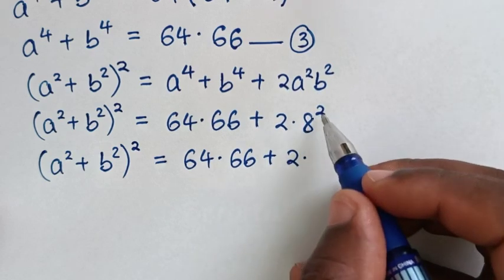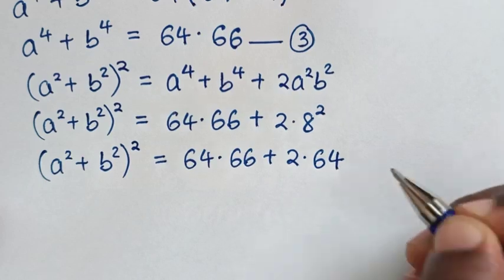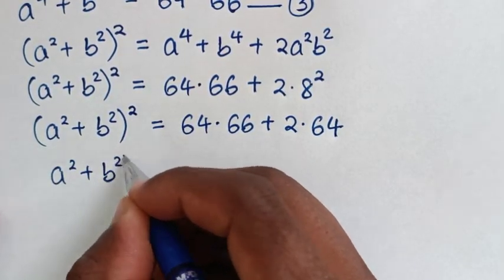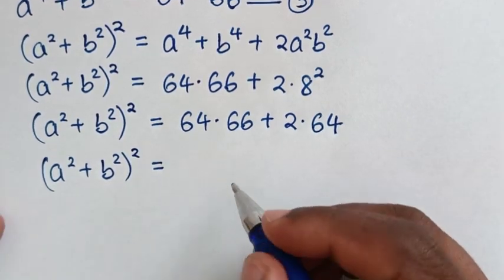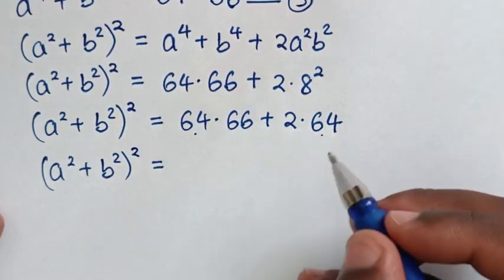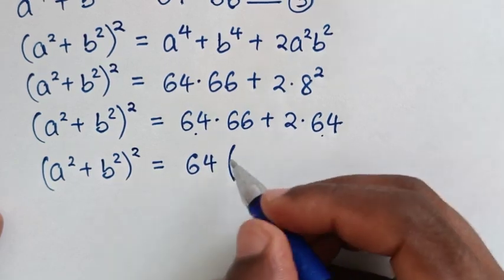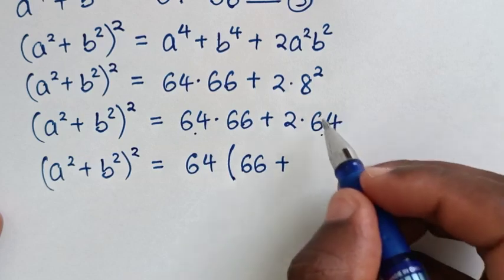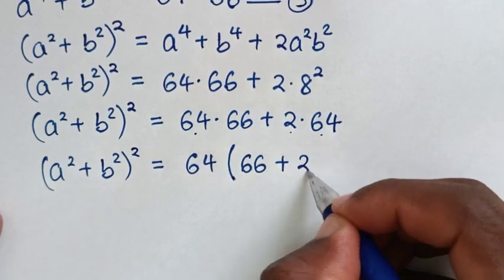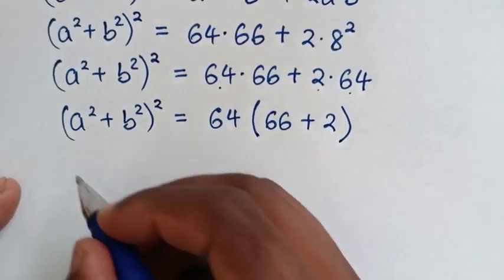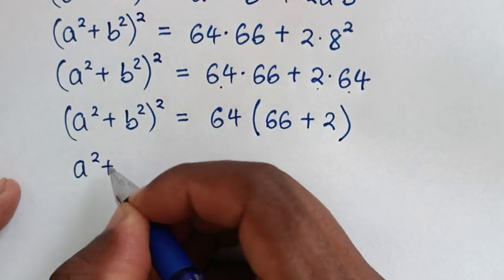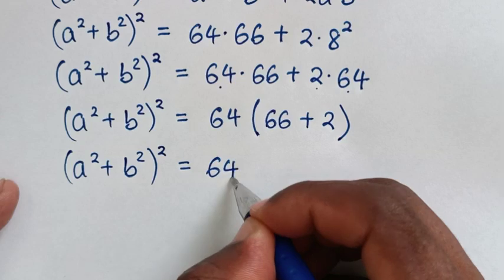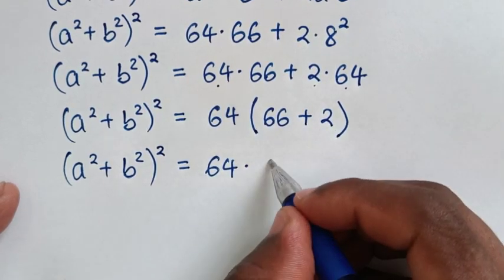So a squared plus b squared bracket squared equals 64 times 66 plus 2 times 64. Taking 64 as a common factor: 64 times open bracket 66 plus 2, giving a squared plus b squared bracket squared equals 64 times 68.